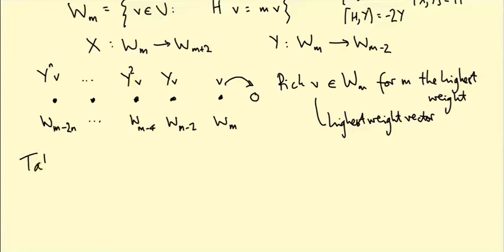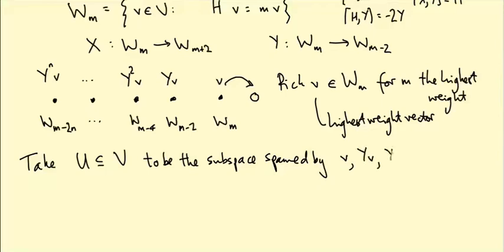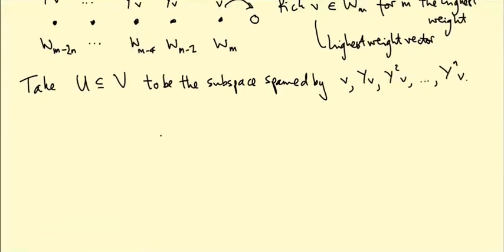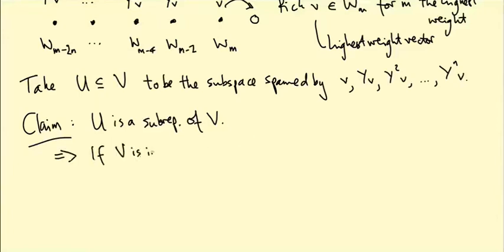So let's take the subspace U to be the subspace spanned by these vectors. So by V, Y V, Y squared V, all the way up to Y to the N V. So the claim is U is a sub-representation of V. So this is good because this tells us, in particular, if V is irreducible, then V equals U, so we have a basis of V.